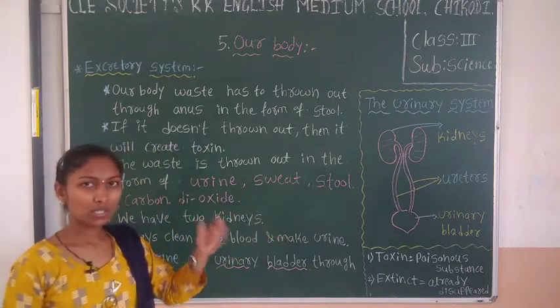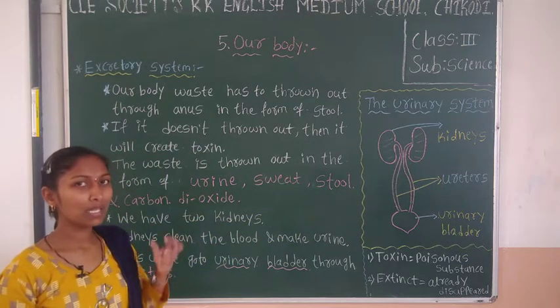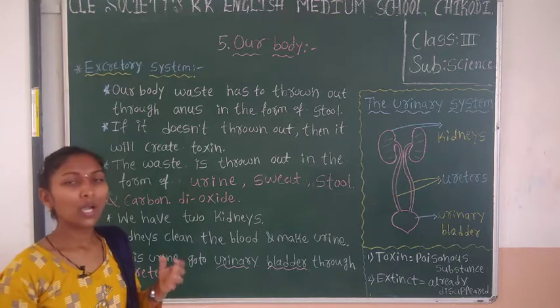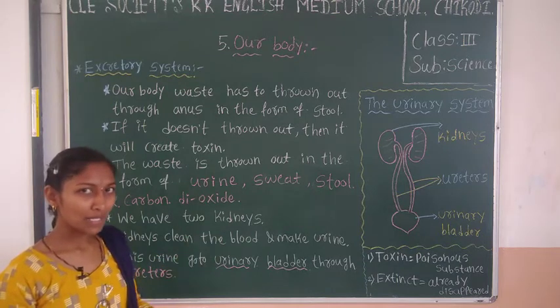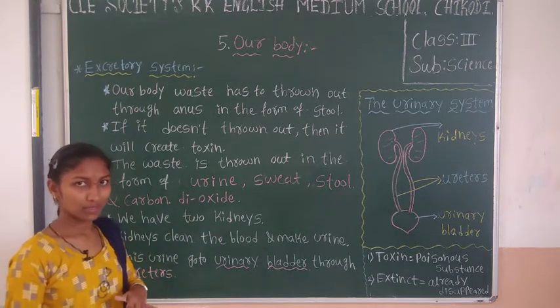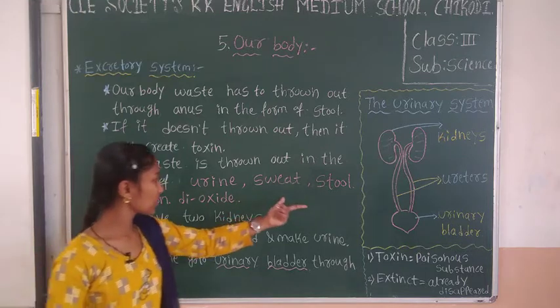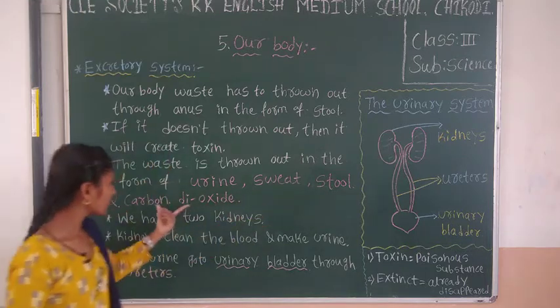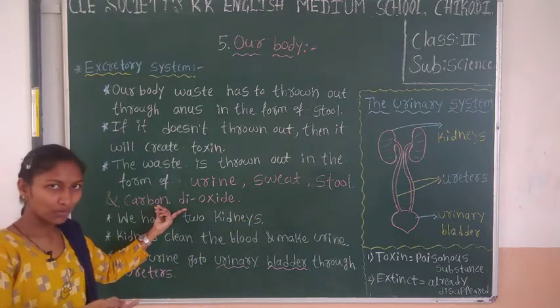After digestion, the remaining undigested food passes out through the anus — that is the stool. Next, carbon dioxide is breathed out as a gas. These are the main forms of waste: stool, carbon dioxide when you breathe out, and urine.